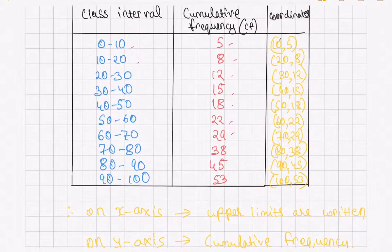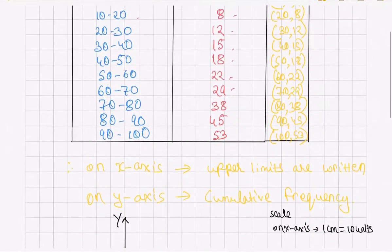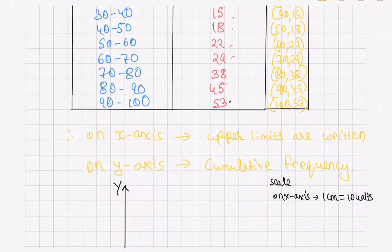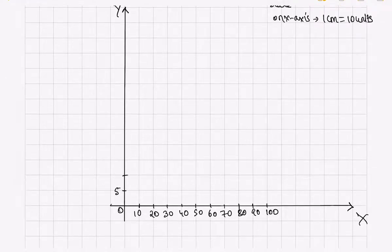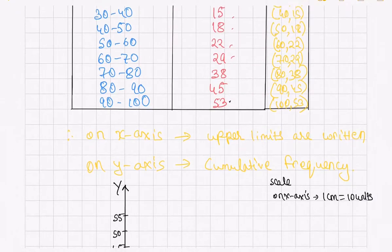Now let us take a particular scale for the y-axis. The cumulative frequencies have to be plotted on the y-axis. You can take a scale of 5, which would be much better because the highest number here is 53. So here you write 5, 10, 15, 20, 25, 30, 35, 40, 45, 50, and finally 55, because the highest number we have is 53.